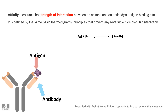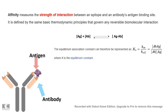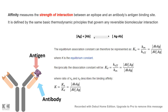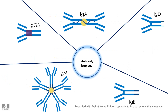The equilibrium association constant (Ka) is defined by the forward reaction rate, while the dissociation constant (Kd) is determined by the reverse reaction. The ratio of association versus dissociation gives the binding affinity of an antigen-antibody reaction. This interaction occurs at a molecular level, so affinity is a measure at the microscopic scale.